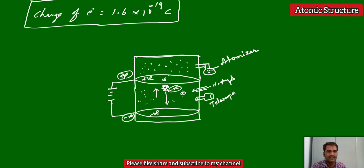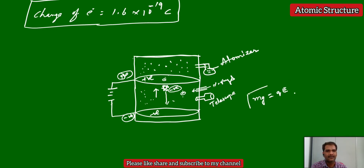If the downward force due to gravity, that is mg, is equal to the upward force from the external electric field, that is the charge of electron Q into electric field E, then the oil droplet cannot move in either direction — it will be stationary. In this experiment, Millikan applied an equal amount of external electric field to make the oil droplet stationary, and by using this formula mg = QE, he calculated the charge of electron. Here m is the mass of the oil droplet, g is gravitational force, E is the external electric field applied, and Q is the charge of the electron — the unknown factor.